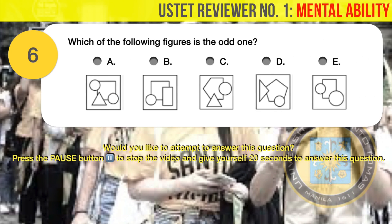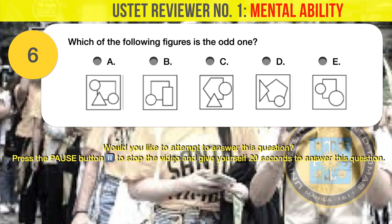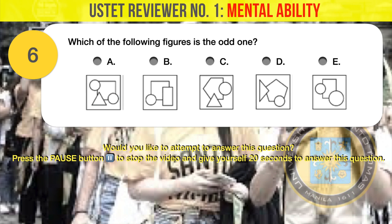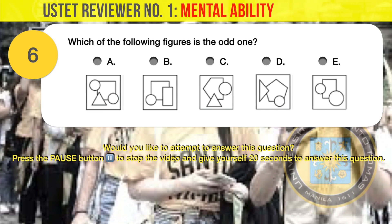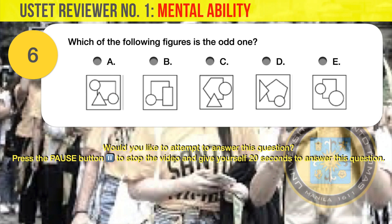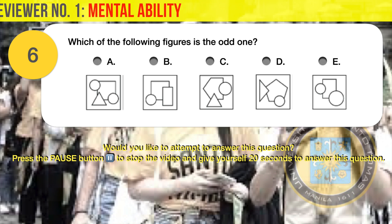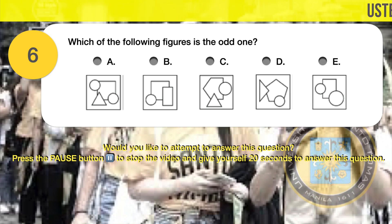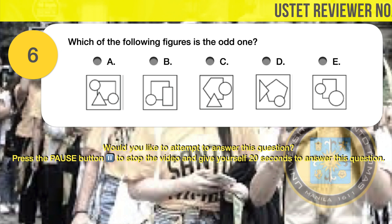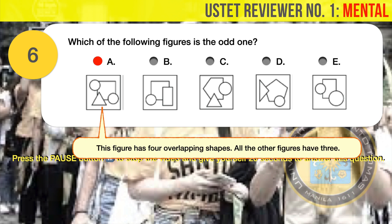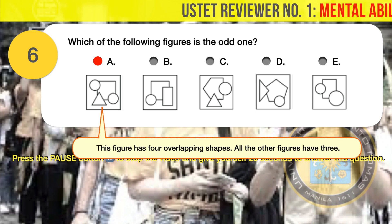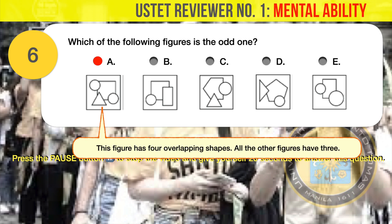Question number 6. Which of the following figures is the odd one out? The correct answer is A. This figure has 4 overlapping shapes, while all the other figures have only 3.